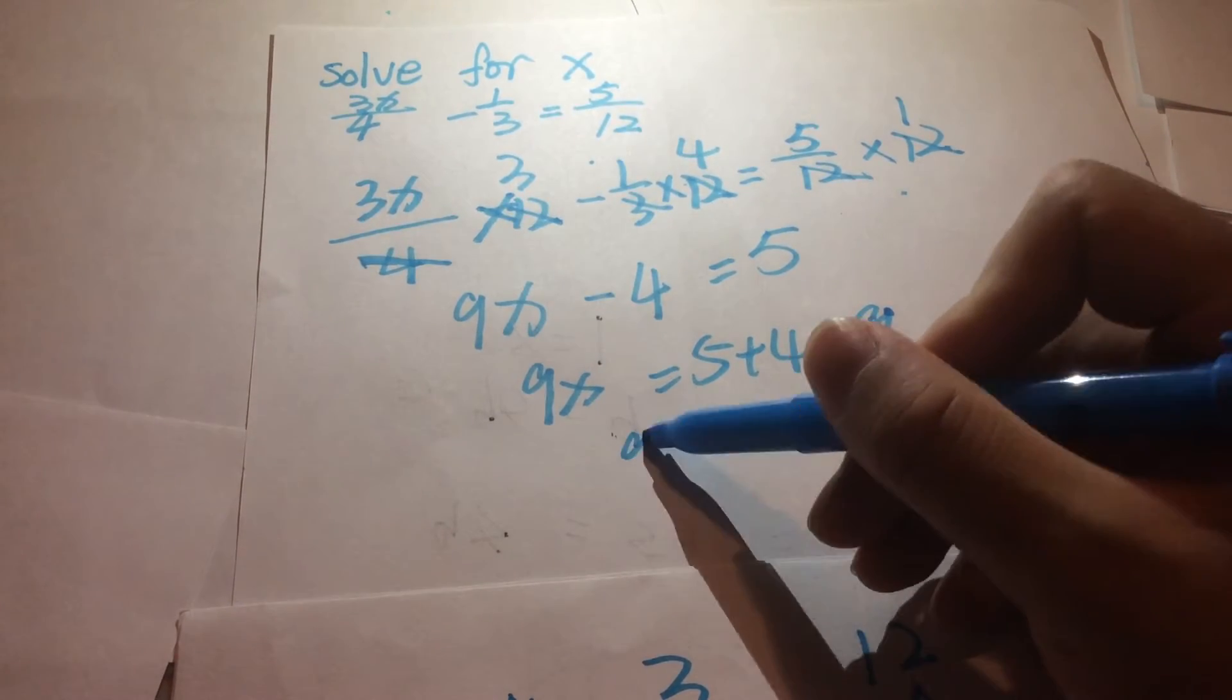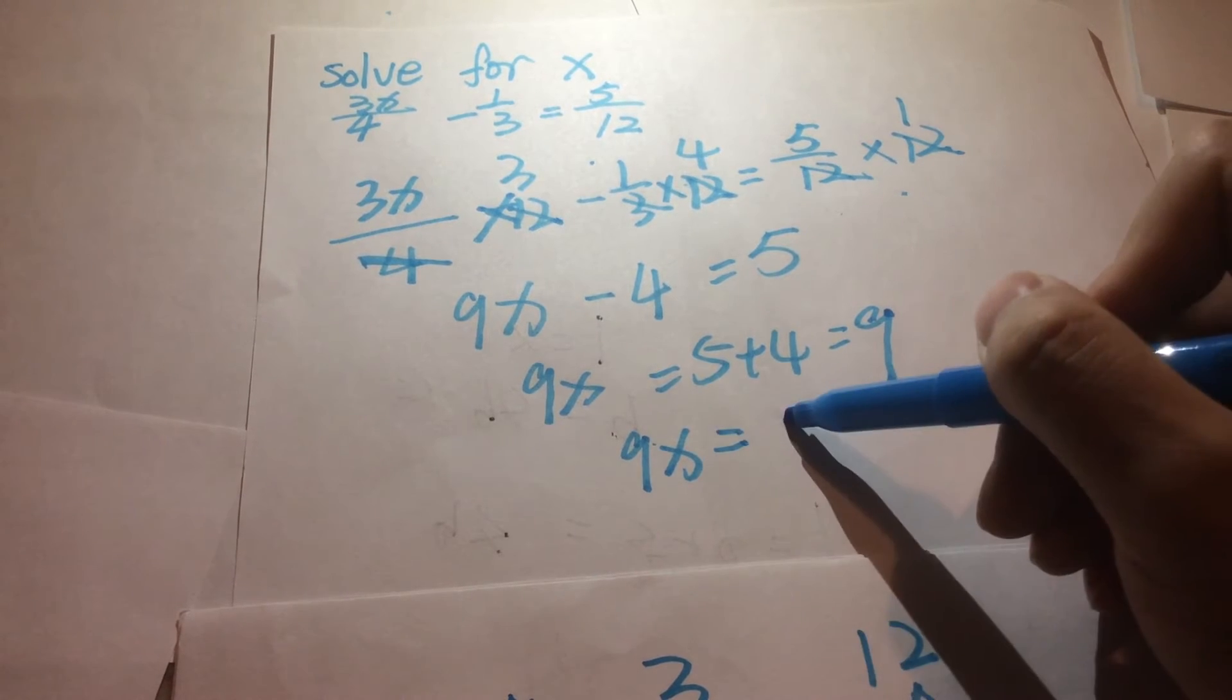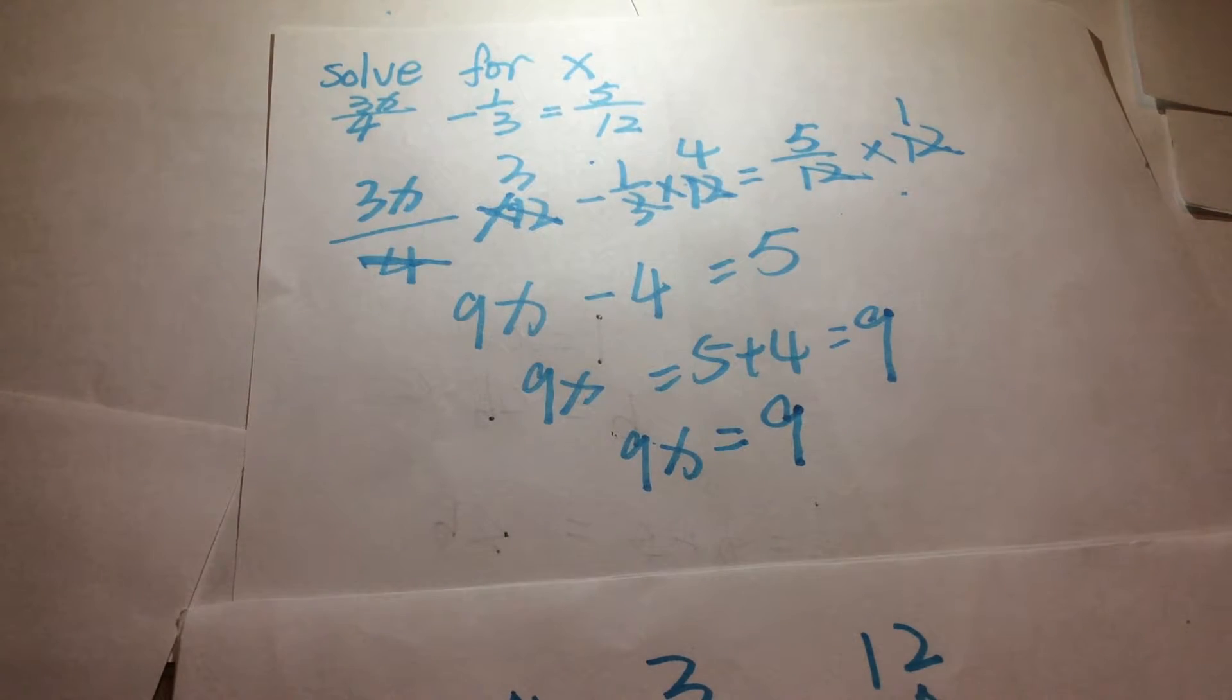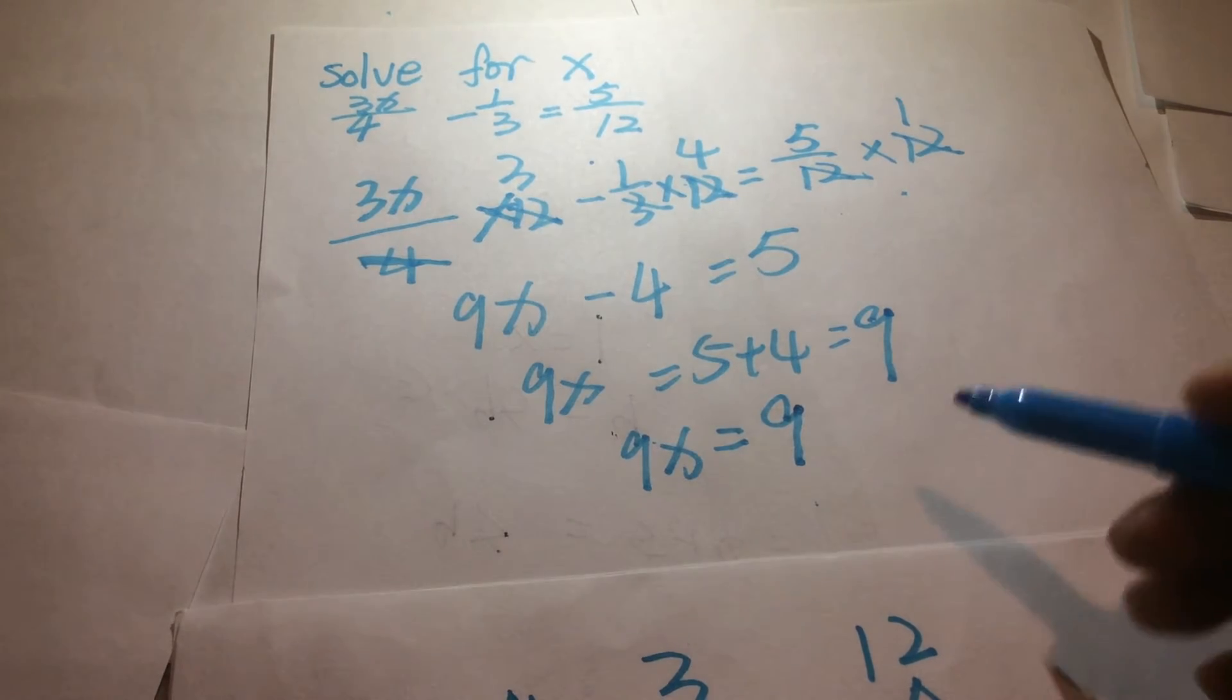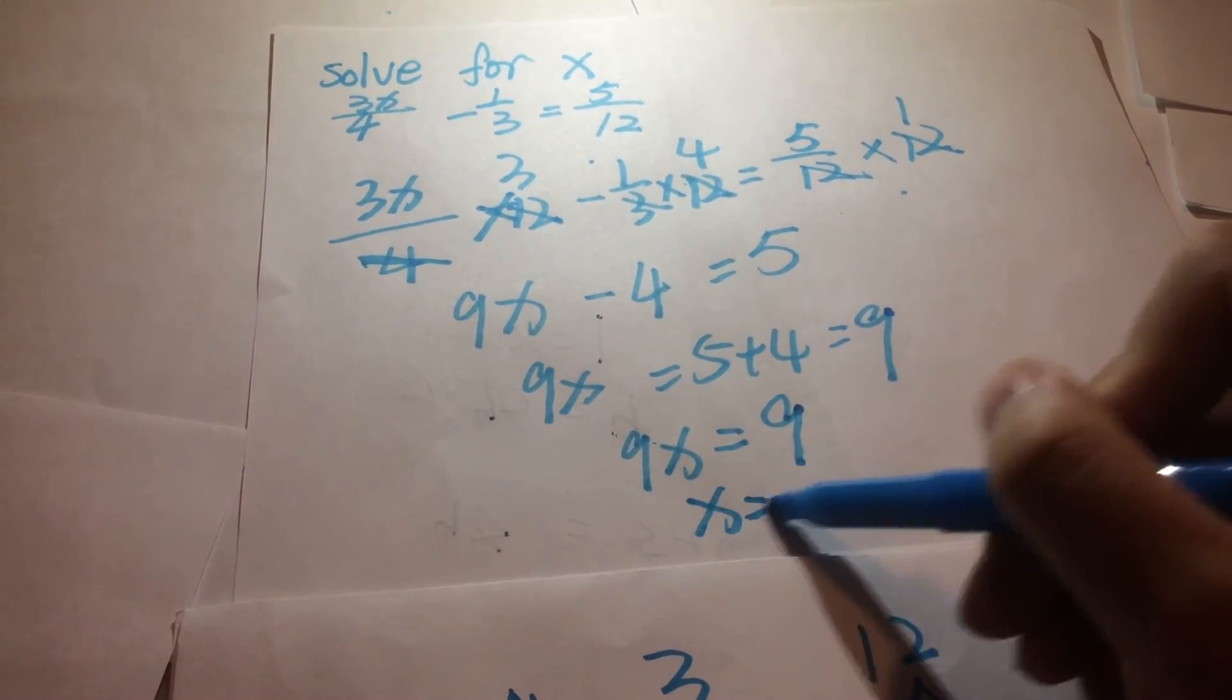So the equation simplified, it's going to be 9x equals 9. After this, we divide it by 9 for both sides, we have x equals 1.